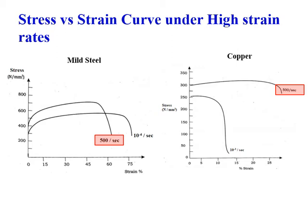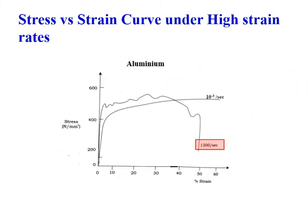The yield strength obtained at 500 per second will be on the higher side — if you plot it along the stress axis, the yield strength level will be higher for the higher strain rate. Similarly, for copper as well, the 500 per second strain rate results in higher yield strength compared to 10^-3 per second.